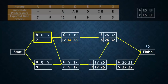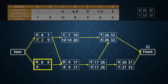A has two successors, C and D. The minimum of their latest starts is 9. So the latest finish for A will be 9, and its latest start will be 2. Activity B has one successor, D, with latest start of 9. So the latest finish for B will be 9, and its latest start will be 0. The backward pass is now complete.